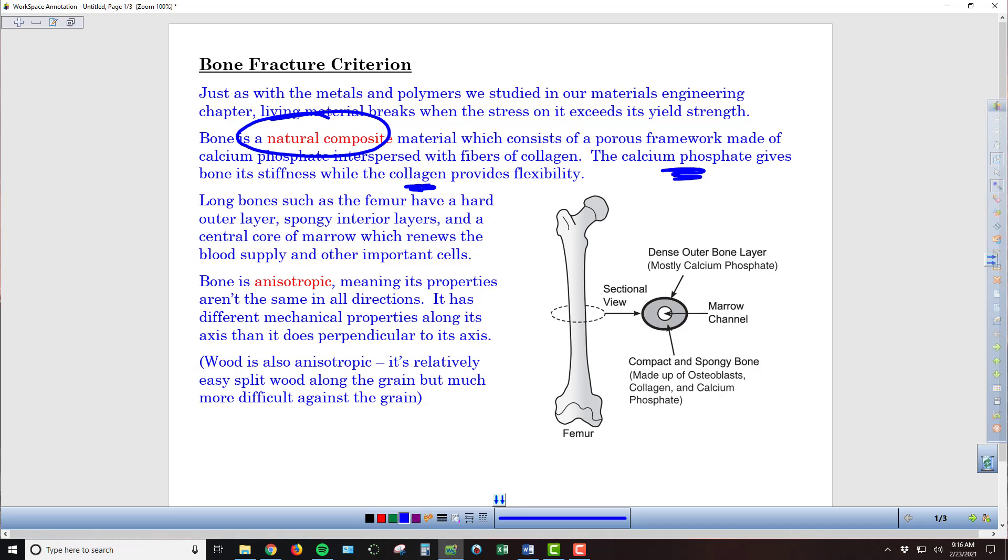Long bones, such as the femur in our upper leg, have a hard outer layer, a spongy interior layer, and then a central core of marrow. We can see that diagrammed here on the side. It's the marrow that renews the blood supply and provides other important cells, and those outer layers are providing the strength.